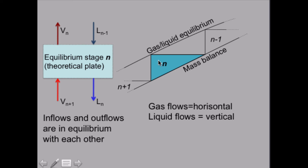So this is equilibrium stage n. Our notation is that the vapor flux leaving equilibrium stage n has an index n, as well as the liquid flux leaving equilibrium stage n. And inflows and outflows are in equilibrium with each other.